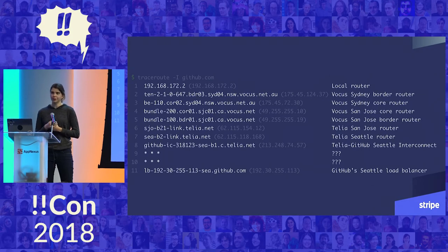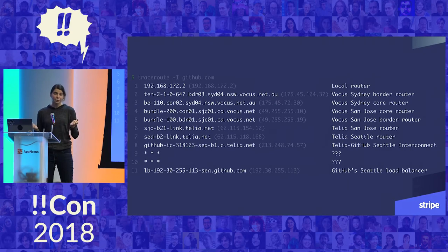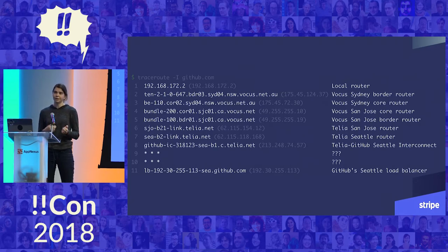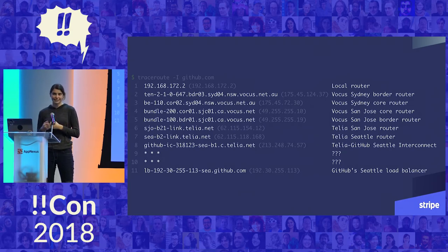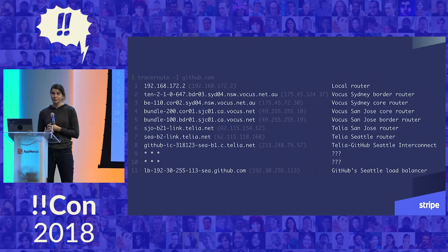If you want to understand the path that your request took through a network, you really want to look at the host names and IP addresses. If we take a look at just those in this trace, you can see the path we took from Sydney Airport to get to GitHub. We started off going through a local router — it's probably local because it doesn't have a host name defined. Then we go through Vocus's network, which connects from Sydney over to San Jose. Then from Vocus we go to Telia, which is an interconnect network provider that goes up the west coast. And finally, we make it to GitHub. It's really cool because I can see that my connection from Sydney goes through San Jose to get to Seattle, which isn't necessarily immediately obvious and is super useful if you live in Australia.